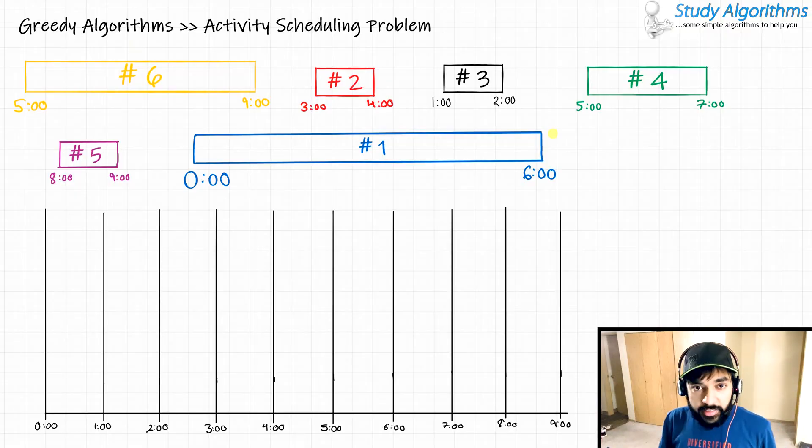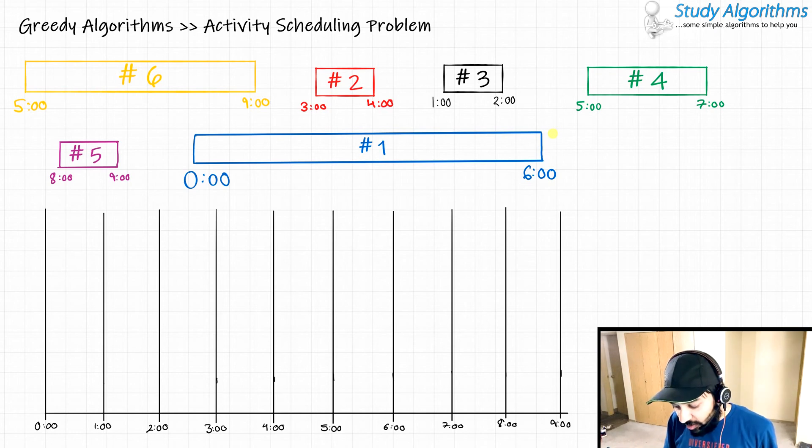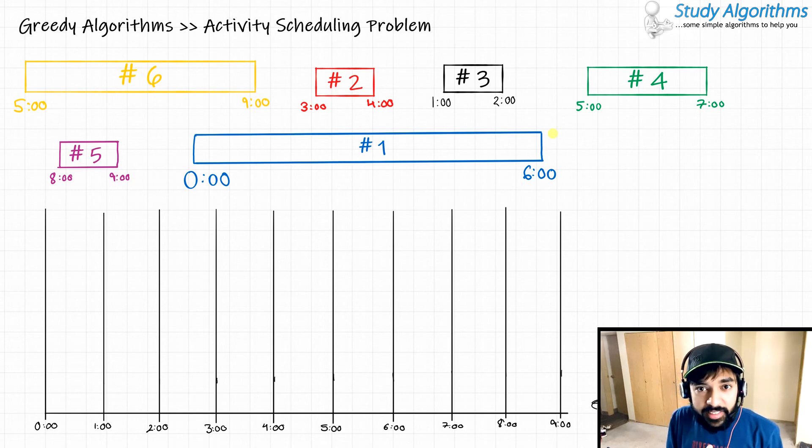Activity scheduling problem is one of the most popular problems that can be solved using a greedy algorithm. Let us understand the problem statement first. You are given a certain set of activities. In this case, you have activities ranging from number 1 to number 6. All of these activities last a certain duration. For example, activity 1 lasts from 0 hours to 6 hours. Activity 4 lasts from 5 hours to 7 hours. Activity 2 lasts from 3 hours to 4 hours.